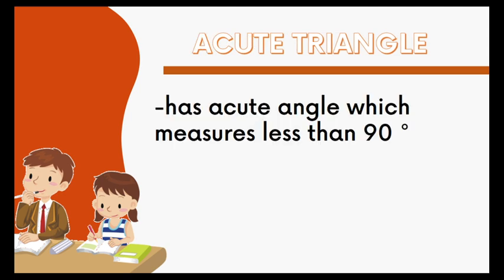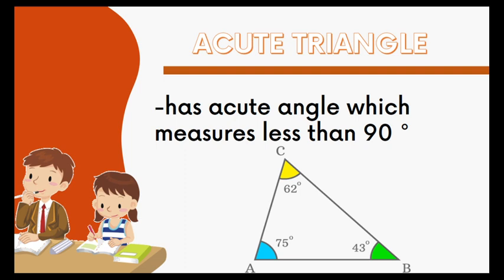And then we have the acute triangle. An acute triangle has an acute angle which measures less than 90 degrees. As you can see in our examples, all of the measurements of the angles are less than 90 degrees. Therefore, this is an acute triangle.